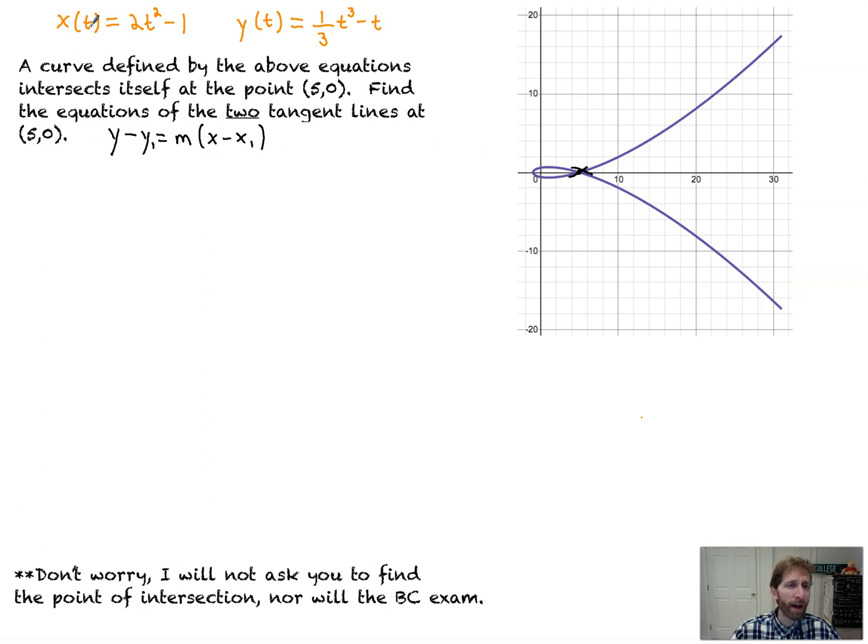To do that, you take each of these values and you set them equal to their respective equations. So this is your x value, and that's your y value. I'll take 5, and I'll set that equal to the x equation. This is going to allow me to find the time or times when we pass through x equals 5. So I add 1 to both sides.